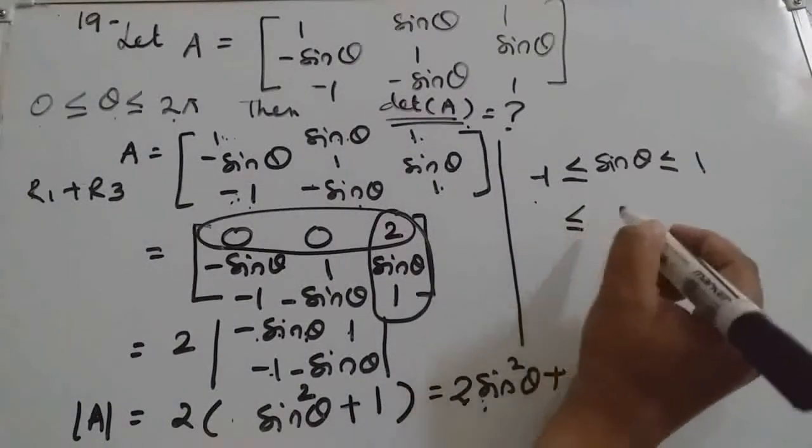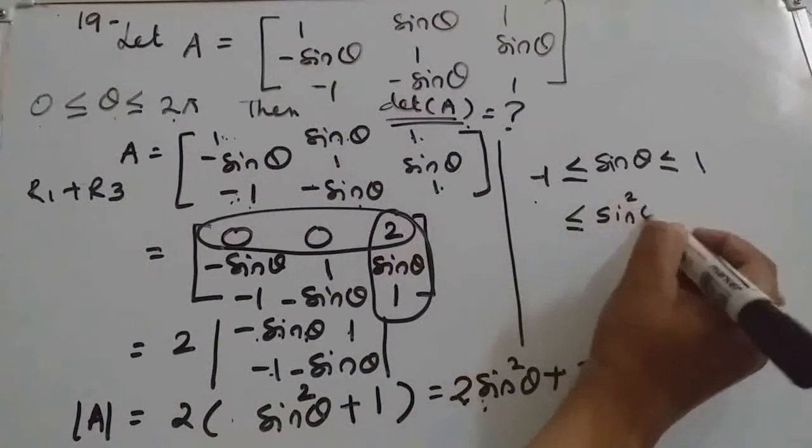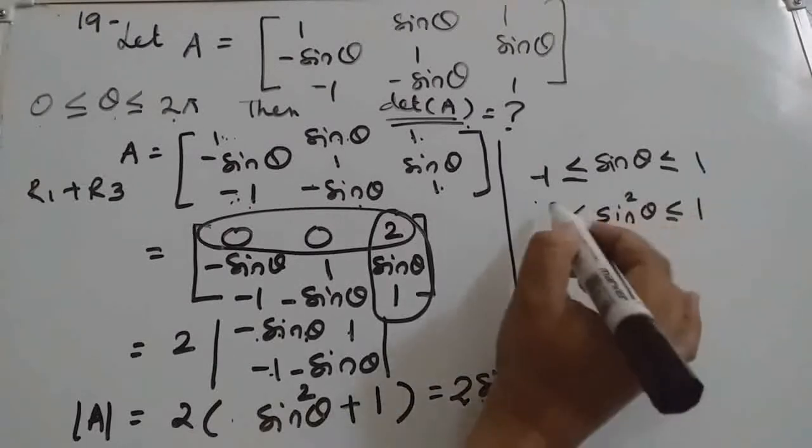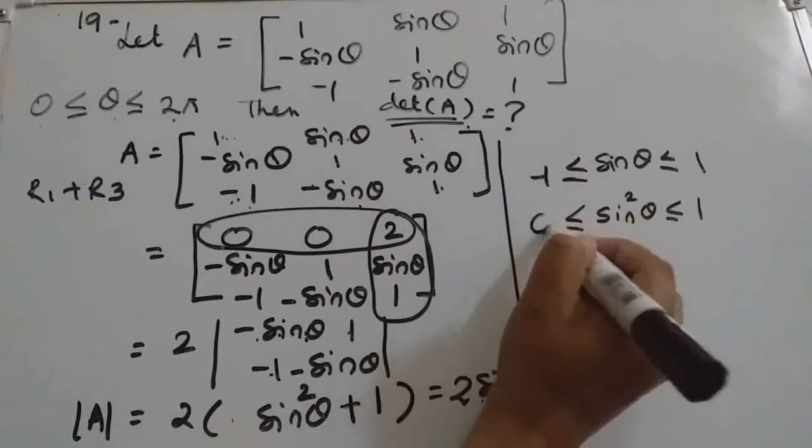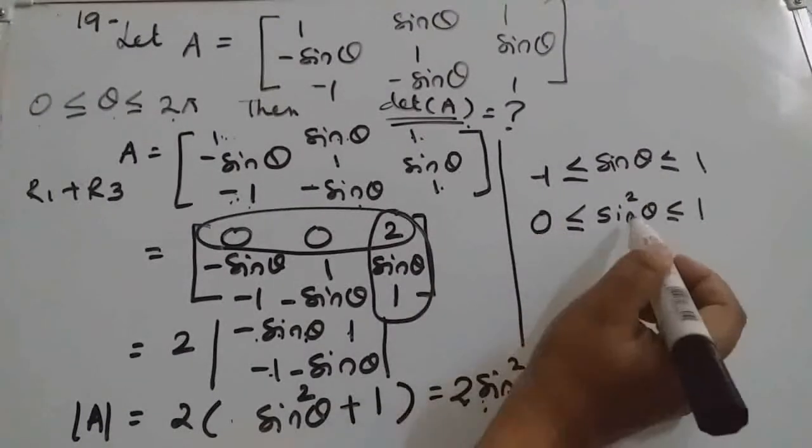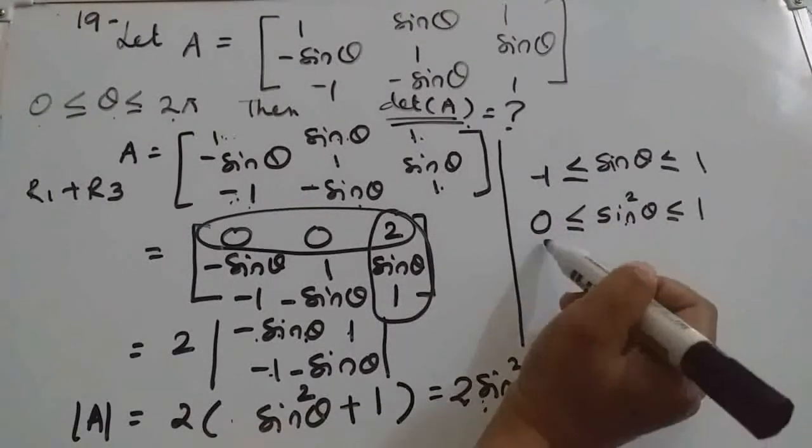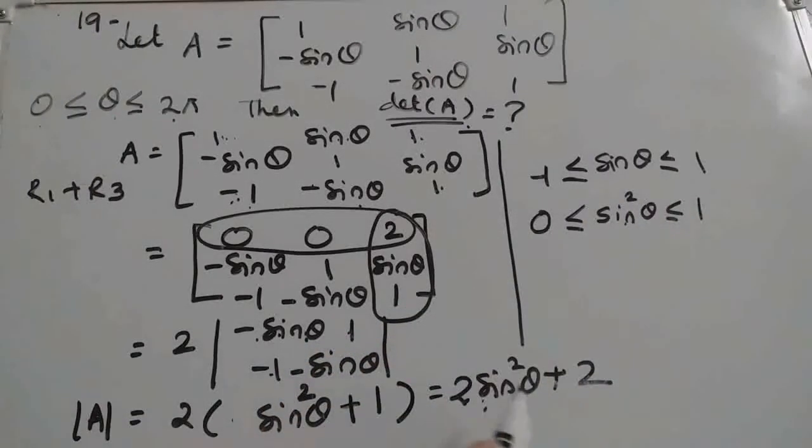Now squaring both the sides. If you square both the sides, what value will come here? Minus 1, 1 won't come, 0 to 1. Because sin square will always be positive. So it will be between 0 to 1. Now we got this expression here.